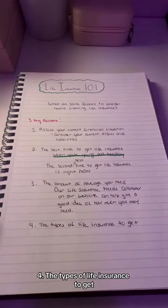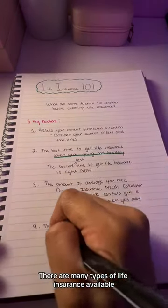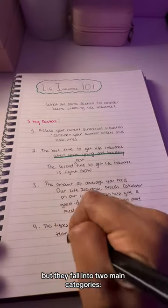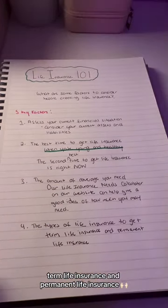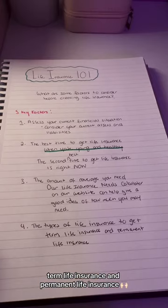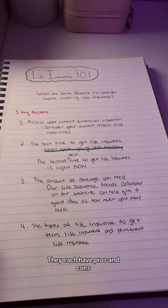Fourth, the types of life insurance to get. There are many types of life insurance available, but they fall into two main categories: term life insurance and permanent life insurance. They each have pros and cons.